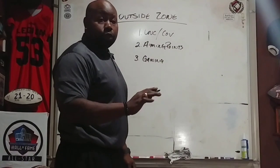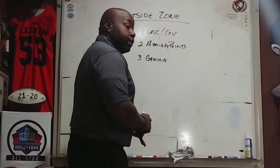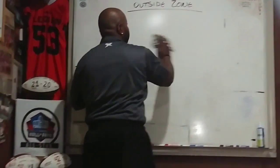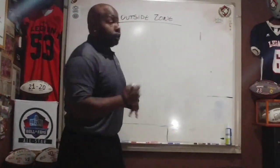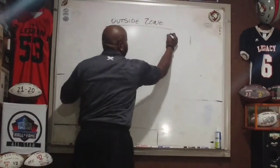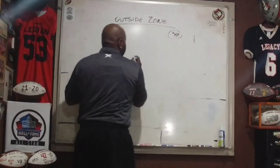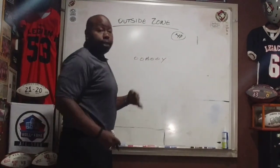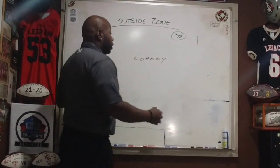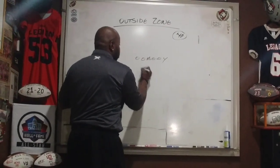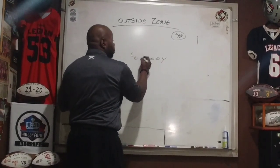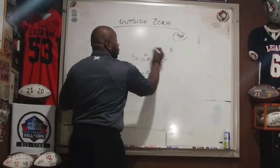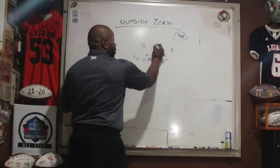Let's talk about running a traditional outside zone play out of a spread formation. We're going to draw it up against a 4-0 front. We're going to go with 11 personnel — one tight end, one running back. Verse a 4-0 front, we have a five technique, a nose guard, a three technique, a seven technique, and we'll put the backer there.